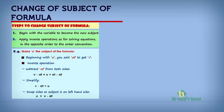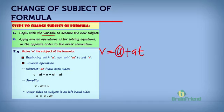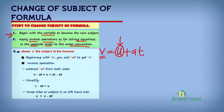There are certain steps to follow to change the subject of a formula. Step 1: take note of the variable we intend to make the subject of the formula. For instance, given V = U + AT, if we want to make U the subject, we highlight our variable U. Step 2: apply inverse operations — take note of this term — as for solving equations, in the opposite order. The operation in this formula is plus, so the inverse would be minus AT.